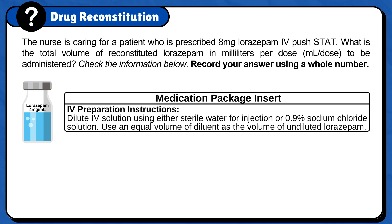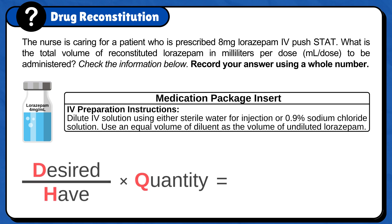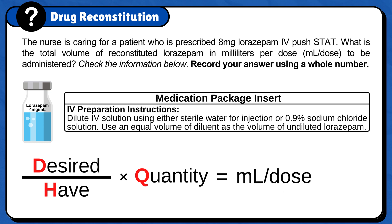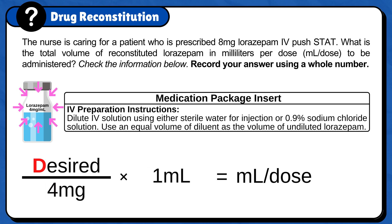First, set up the formula: desired over half times quantity. The next step is to add the unit answer, milliliters per dose. Now that the formula is ready, we need to plug in the numbers. Start with half and quantity — for this problem, that is 4mg per 1mL.